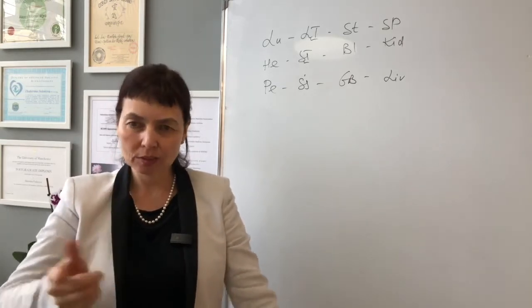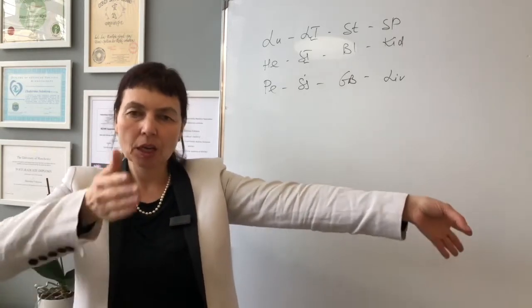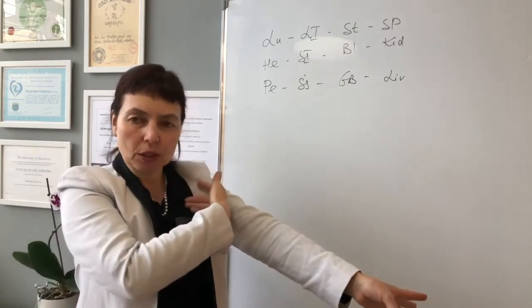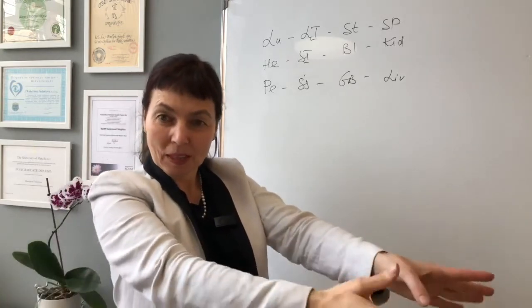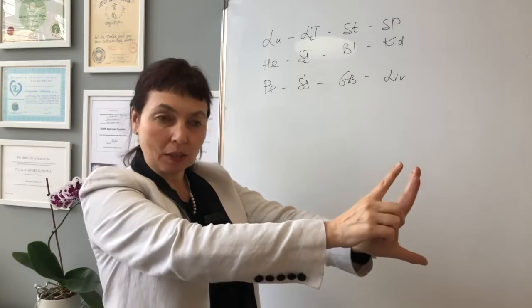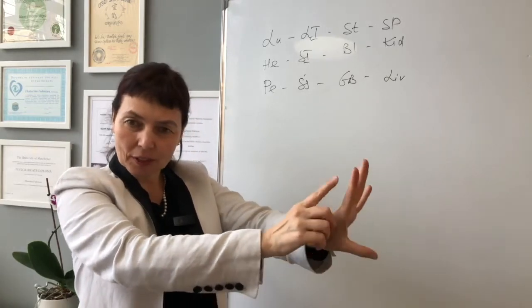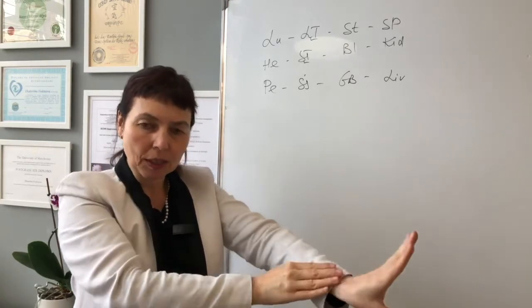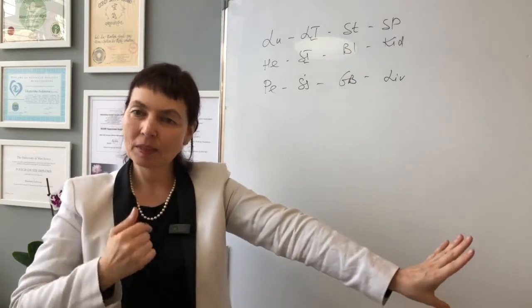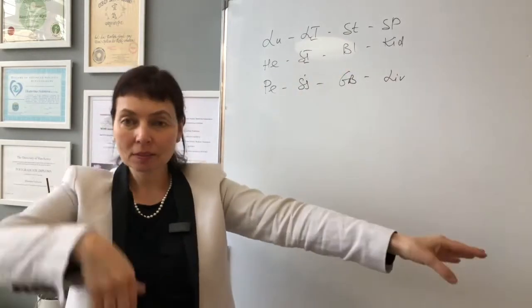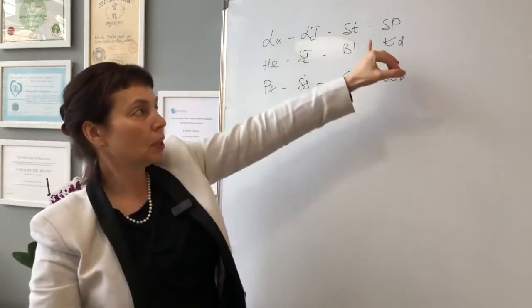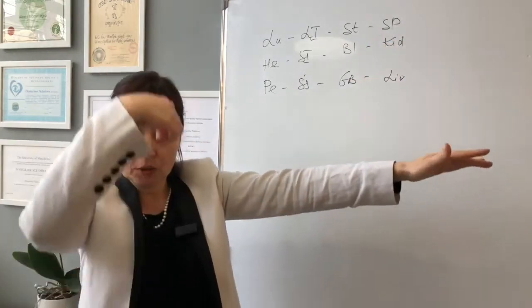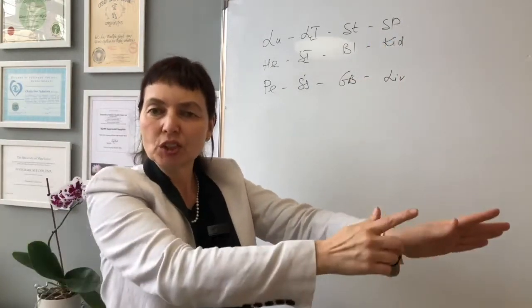When the channel starts, for example lung, it starts in the body, goes to the arm. Large intestine starts from the end of the second finger, goes into the middle. Stomach goes from the top to the bottom, spleen from the bottom to the top. So this rhythm never changes.